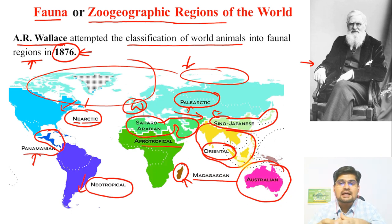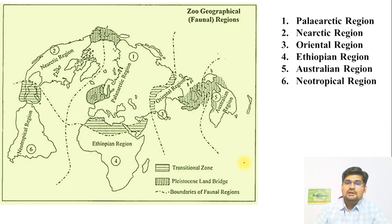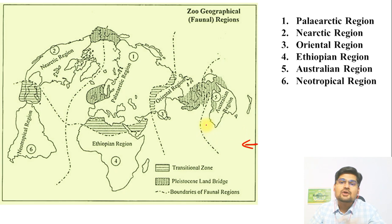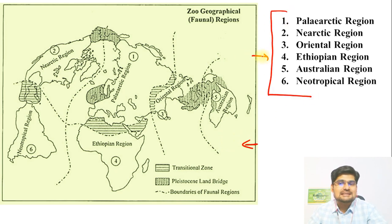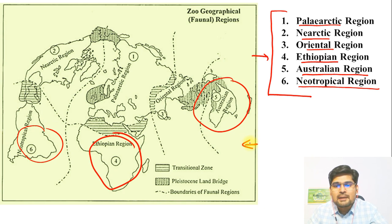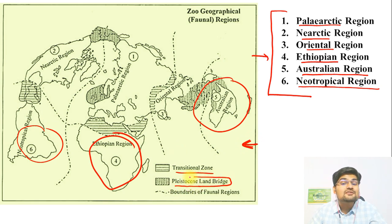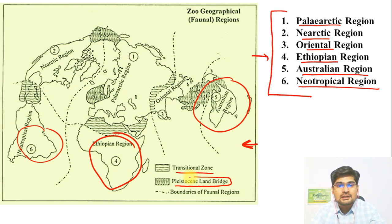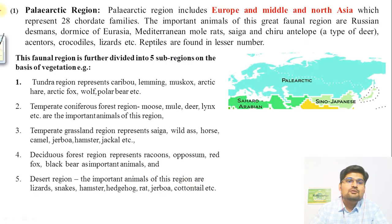Now let's elaborate the features and characteristics of each region. This was the original map from 1876 which Wallace drew citing various regions. The earlier map we saw is the modern connotation of the same, with a few more regions divided. In the original, A.R. Wallace divided the world into six regions: Palaearctic, Nearctic, Oriental, Ethiopian — basically entire Africa — Australian — generally the entire Australia and New Zealand section — and Neotropical, which is part of South America. Transition zones and geological time scale land bridges for species migration were also discussed in this concept.